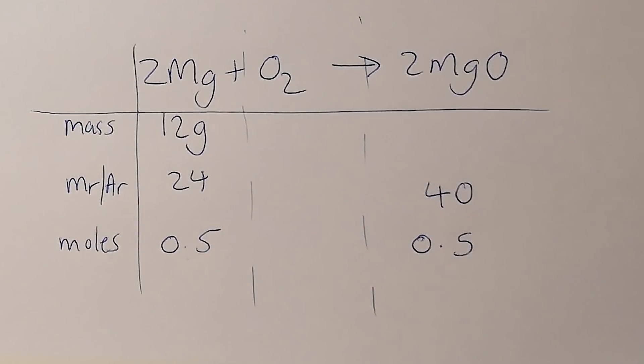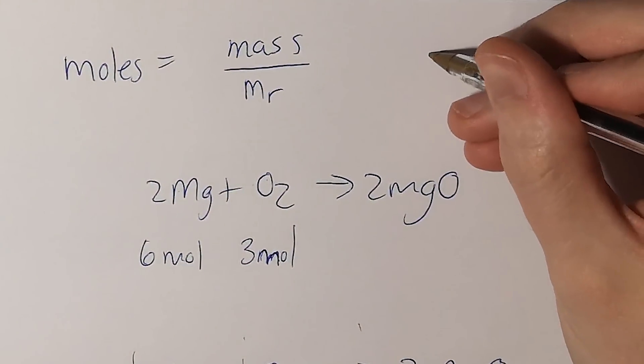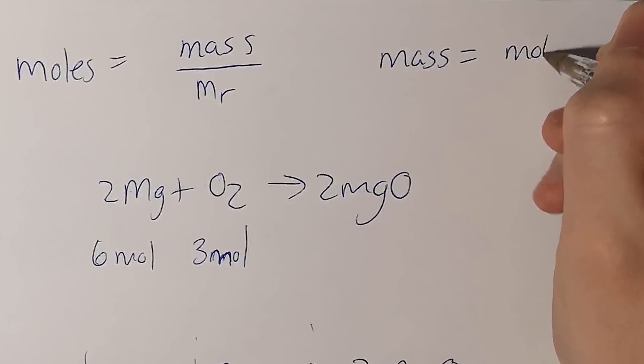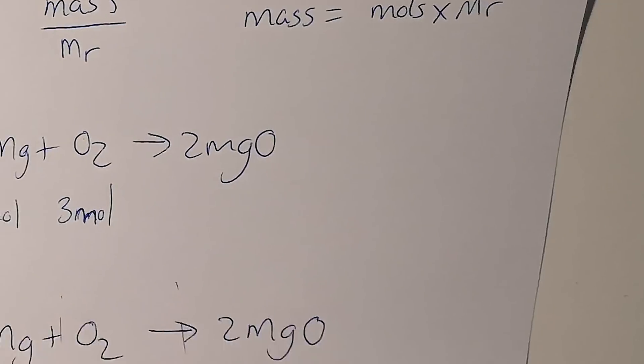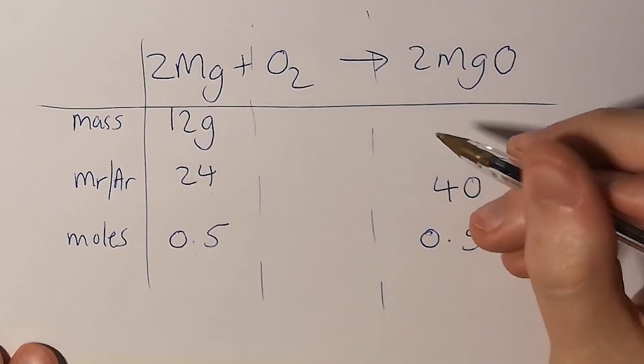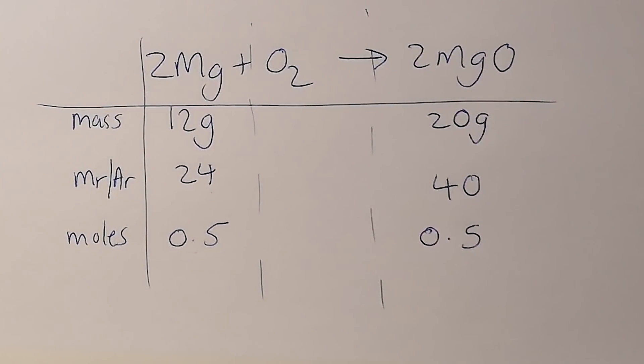The Mr of magnesium oxide we worked out is 40. I can rearrange the equation to work out that mass equals moles times Mr. So if I do 40 times 0.5, I get 20 grams of magnesium oxide that we would produce if we burnt 12 grams of magnesium fully in air.